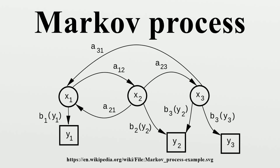Notice that the general state space continuous time Markov chain is general to such a degree that it has no designated term. Markov processes arise in probability and statistics in one of two ways. A stochastic process defined via a separate argument may be shown mathematically to have the Markov property, and as a consequence to have the properties that can be deduced from this for all Markov processes. Alternately, in modeling a process one may assume the process to be Markov, and take this as the basis for a construction. In modeling terms, assuming that the Markov property holds is one of a limited number of simple ways of introducing statistical dependence into a model for a stochastic process in such a way that allows the strength of dependence at different lags to decline as the lag increases.